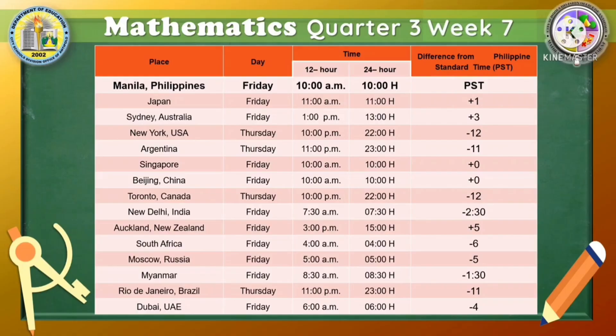If it is 10 AM in Manila, Philippines, and you are asked to give the time in Japan, it is 11 AM. You will just add 1 hour since Japan is 1 hour ahead compared to Manila, Philippines. While in Sydney, Australia, it is 3 hours ahead. New York is 12 hours behind.